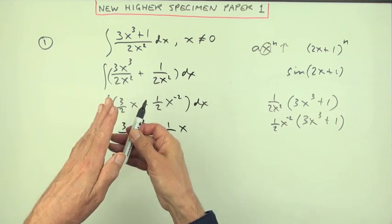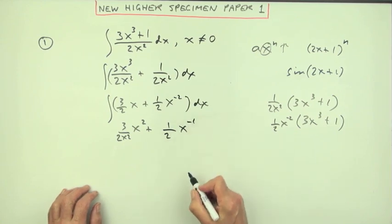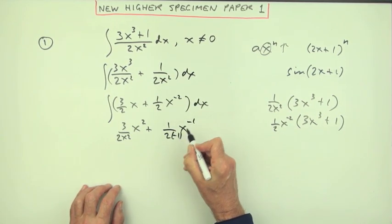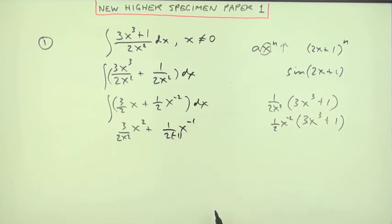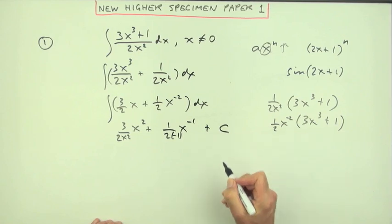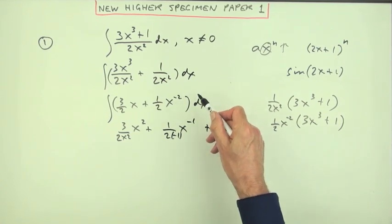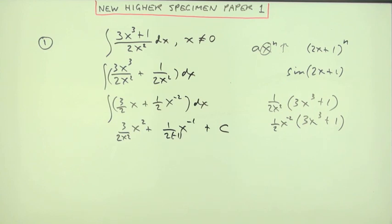Plus one over two—add one to the power. Watch when you're adding to a negative two. Negative two means you've dropped down two. Adding one brings you up to negative one, but divide by that new one. Now I could just switch that to negative, but I'll put that down there just now. Don't forget there could have been some constant that would have disappeared under differentiation, so when you integrate it would pop back in again.